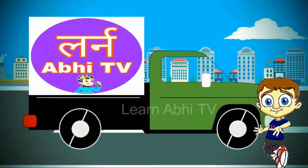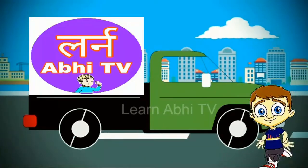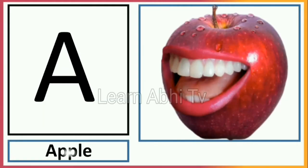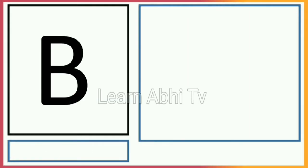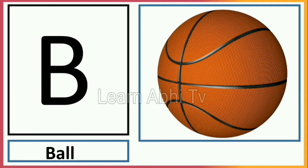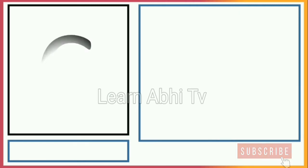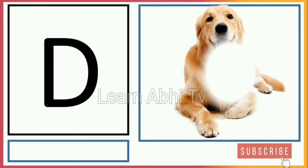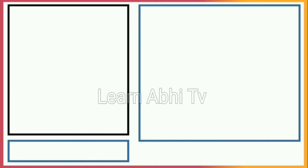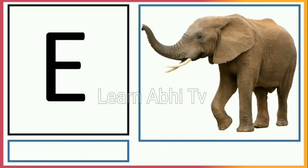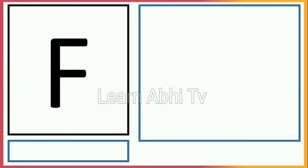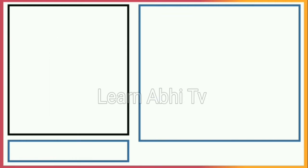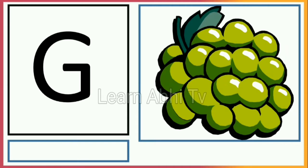Learn Abbey TV. A for Apple, B for Ball, C for Cat, D for Dog, E for Elephant, F for Fish, G for Grapes.